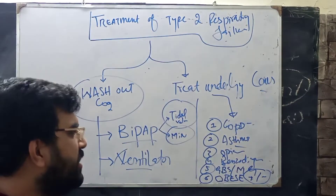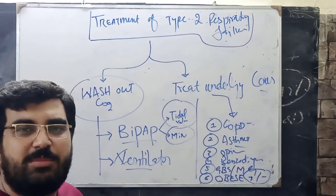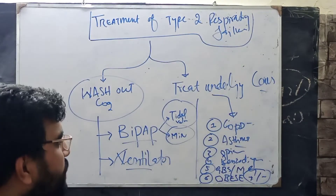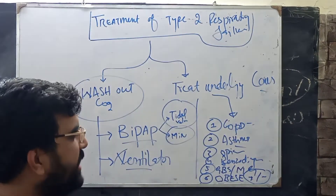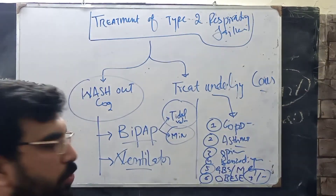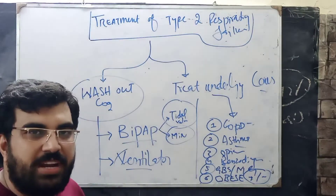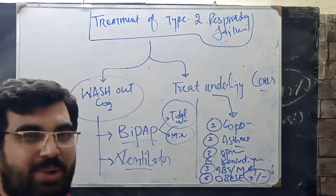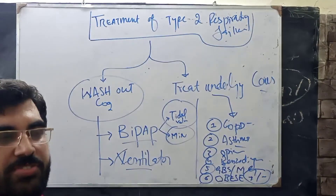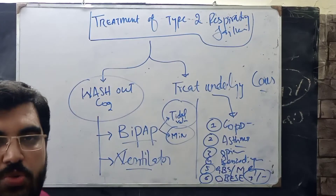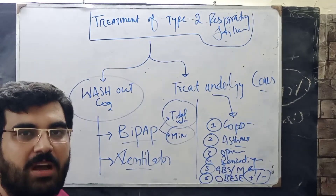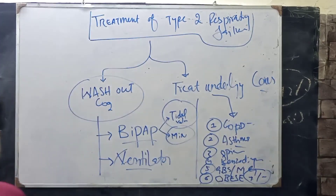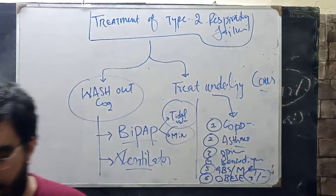Most doctors think that a non-rebreather mask (NRM) is a treatment for type 2 respiratory failure — it is not. NRM is a treatment for type 1 respiratory failure; it increases FiO2. NRM does not help in type 2 respiratory failure; rather, it aggravates it. You are giving more oxygen, which causes more CO2 retention, leading to CO2 narcosis — meaning BiPAP or ventilator. With limited resources, we must be careful regarding oxygen delivery. Thanks for watching — please subscribe and press the bell icon for notifications.